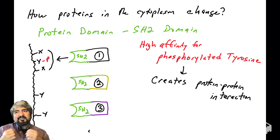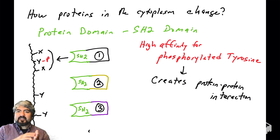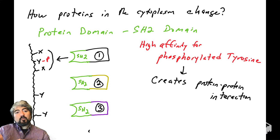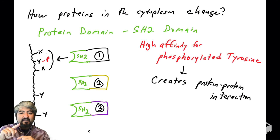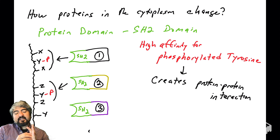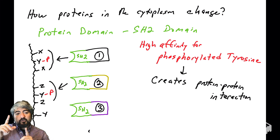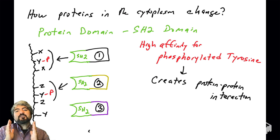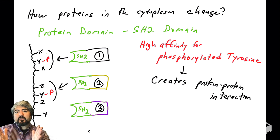Not every SH2 domain binds every phosphorylated tyrosine — there is specificity. It actually depends on the amino acids in the area surrounding the tyrosine. Protein number two is not binding this phosphorylated tyrosine, even though it has an SH2 domain, because it binds phosphorylated tyrosine surrounded by different amino acids. The SH2 domain of protein number three might bind a different phosphorylated tyrosine on a completely different protein. So specific SH2 domains bind specific phosphorylated tyrosines, creating new protein-protein interactions.